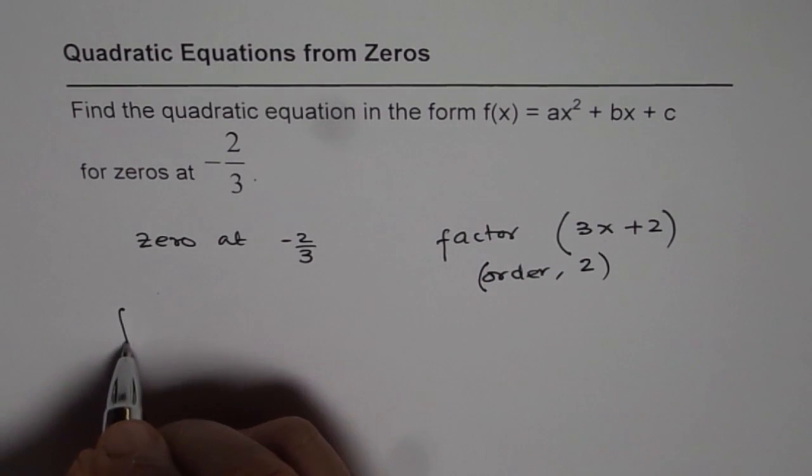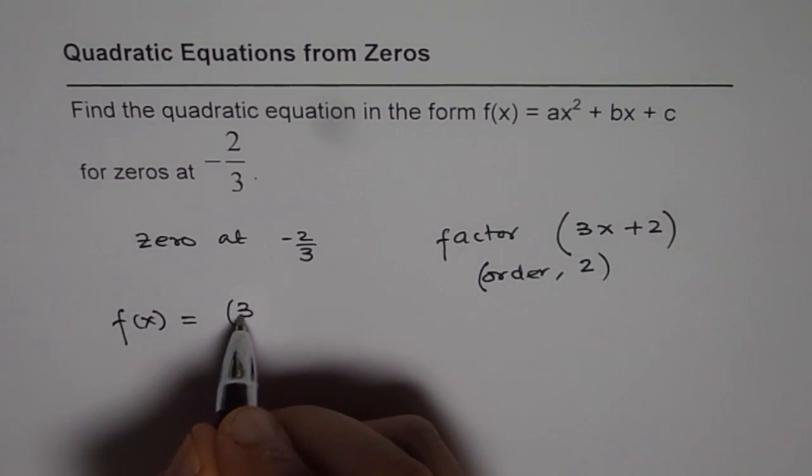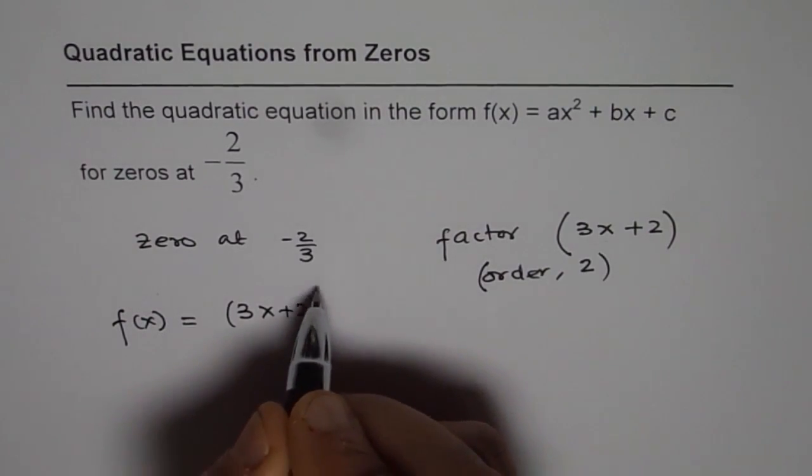That is to say that the function which we want to figure out is basically (3x + 2)², right?